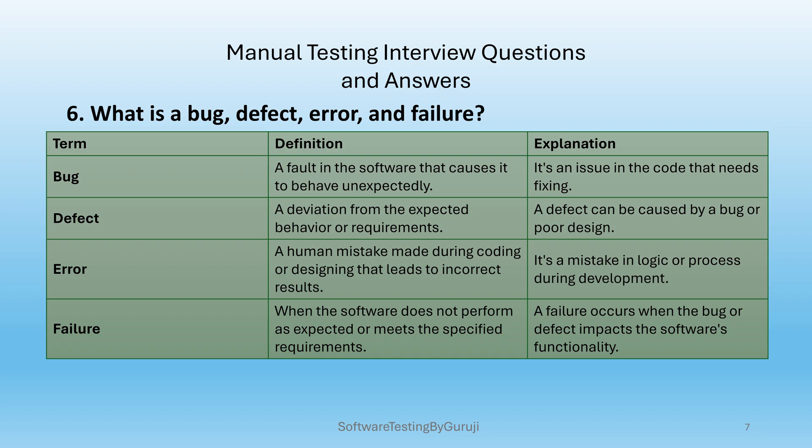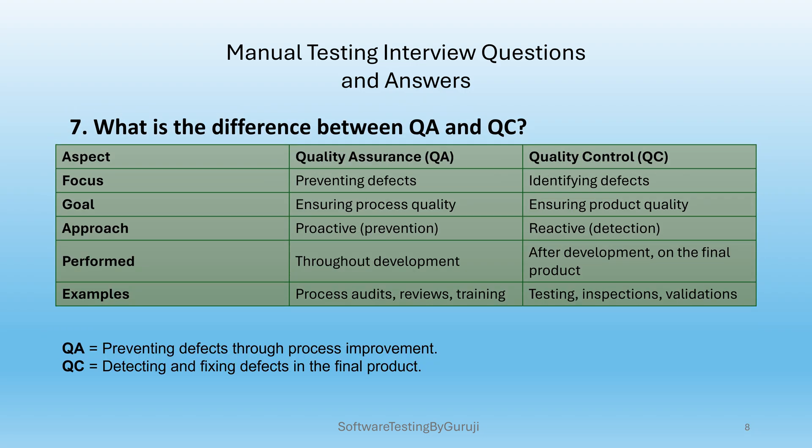A failure occurs when the software does not perform as expected or does not meet the specified requirements. A failure happens when a bug or defect impacts the software's functionality.